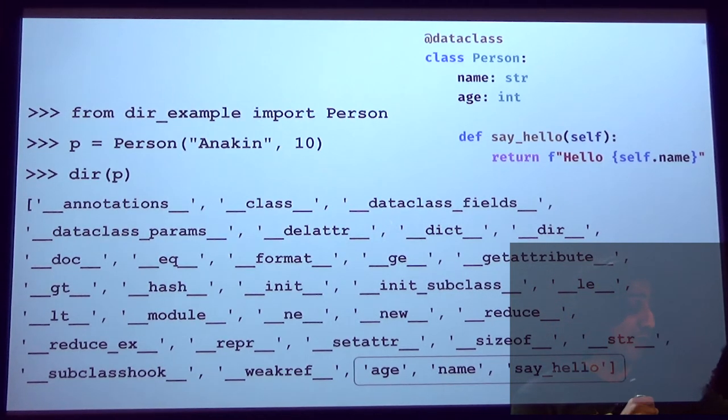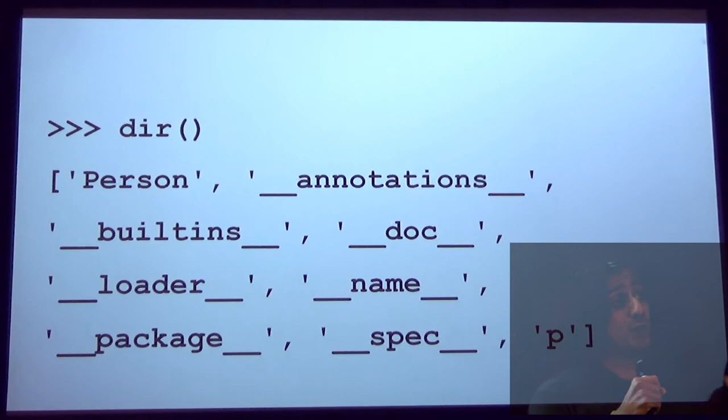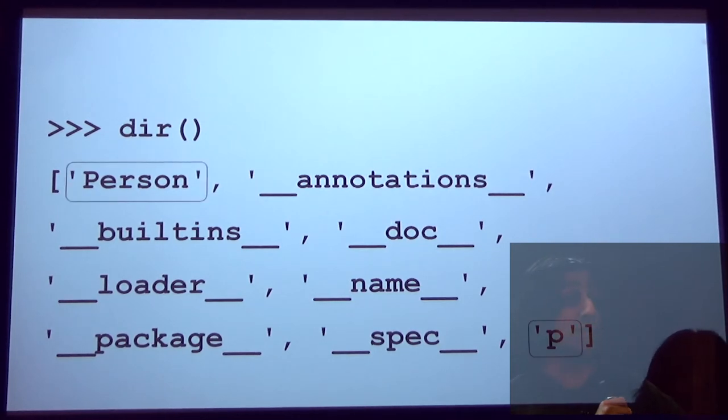And so the three that we created, which are age, name, and say hello, they're the ones that are highlighted on the bottom right there. So if now we do a dir without any parameters, we're going to have person, and we're going to have p, which is the thing that we imported as well as the object we created. Pretty standard stuff.